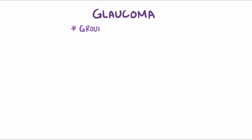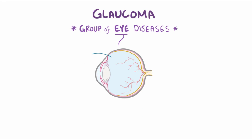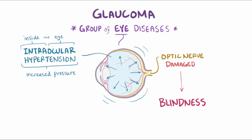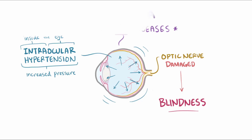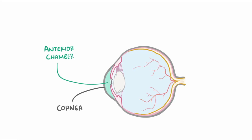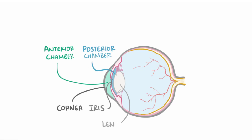Glaucoma is a group of eye diseases that are usually due to intraocular hypertension, or increased pressure in the eye, which damages the optic nerve and if left untreated can lead to blindness. Looking at a cross-section of the eye, it's split up into different chambers. The anterior chamber includes the area from the cornea to the iris.